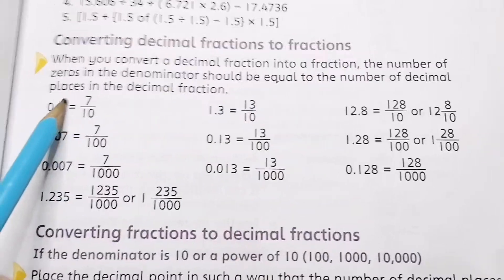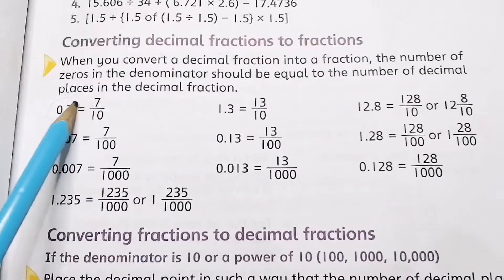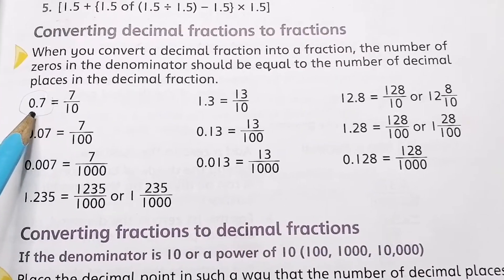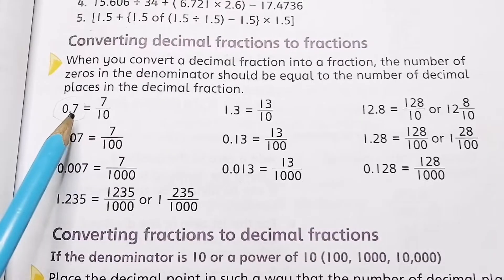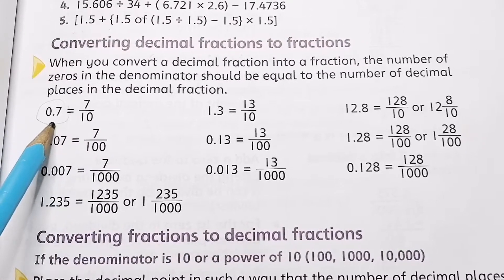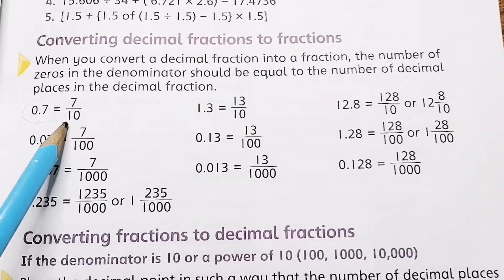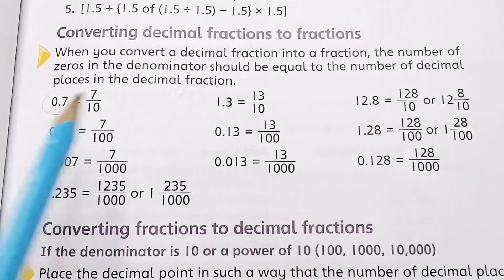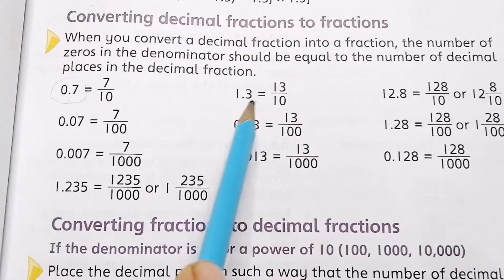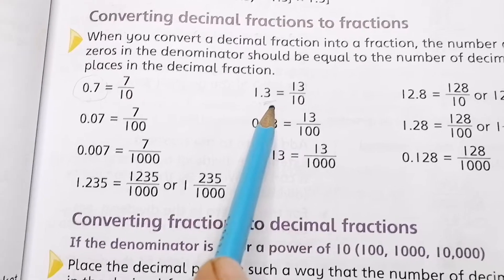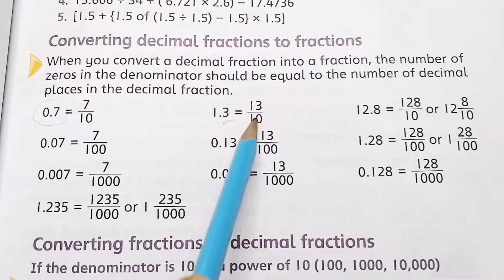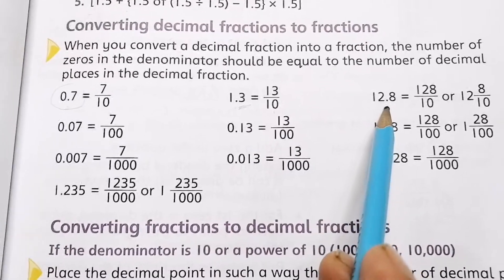Some examples are given. For 0.7, we'll see how many numbers are on the right side of the decimal. If there is one number, we put 10 as the denominator. For 1.3, there is also one number on the right side of the decimal, so we put 10 as denominator.